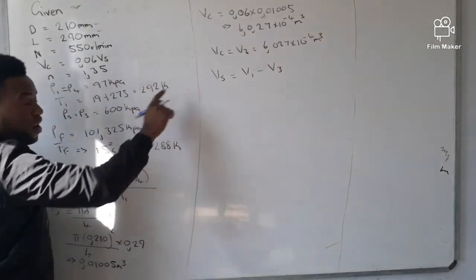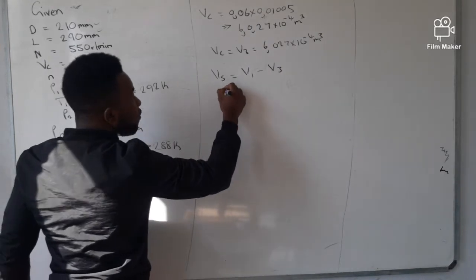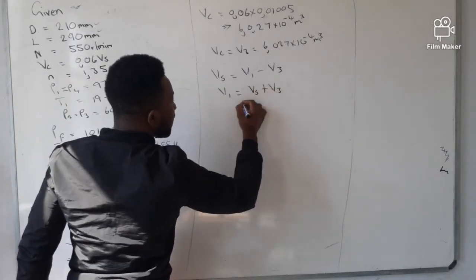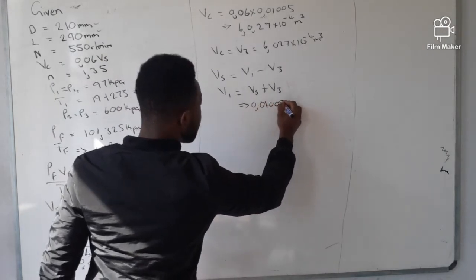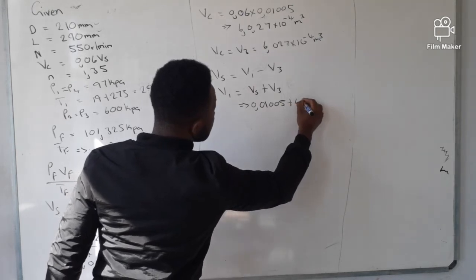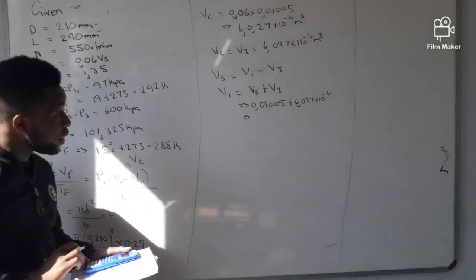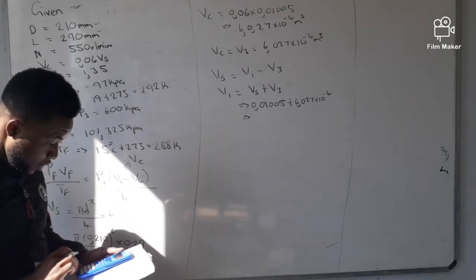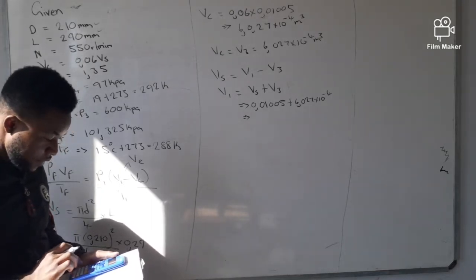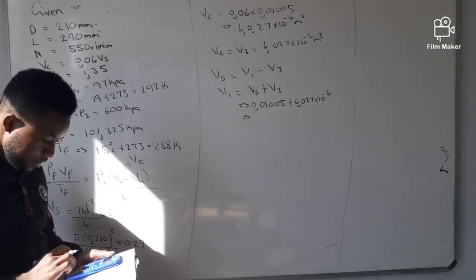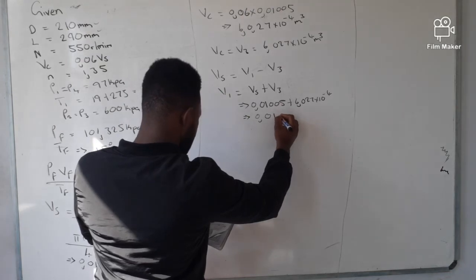Computing V1: V1 = Vs + V3 = 0.01005 + 6.027 × 10⁻⁴ = 0.0107 cubic meters. So we now have V1 = 0.0107 m³. The only remaining unknown is V4, and we need a formula to calculate it.